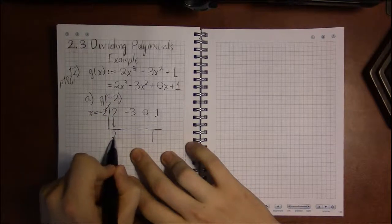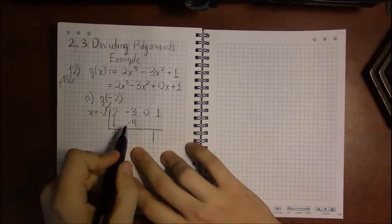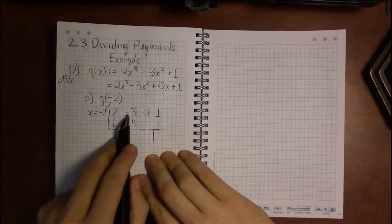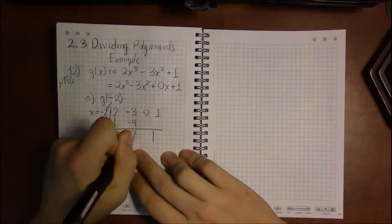Then we multiply by minus 2, multiply that by the leading coefficient to get minus 4, and place that minus 4 beneath the x squared coefficient. Then we add to get minus 7.